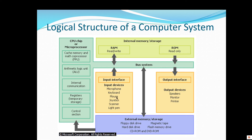Then we have user interface devices — ways to get information into the computer. And if you want information to come out of the computer, there are speakers, monitors, and printing if you want a hard copy. Then we have secondary storage systems, and also SSD, which is a very common secondary storage type. This is where all your data and programs live until it's time to run them. So if you double-click on Microsoft Word, the computer will take the program, store it in RAM, and then start to run it.